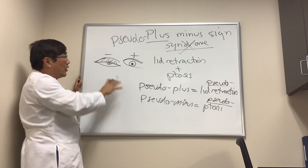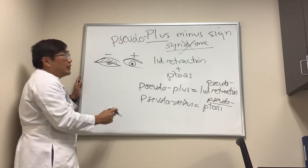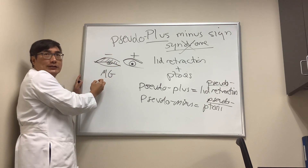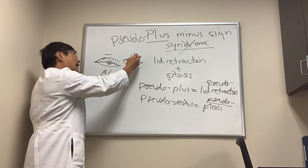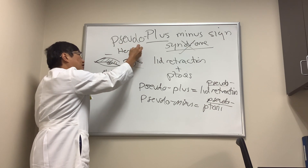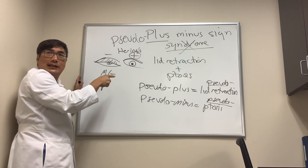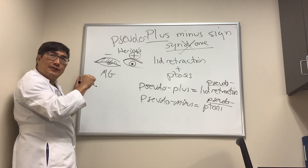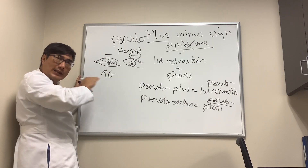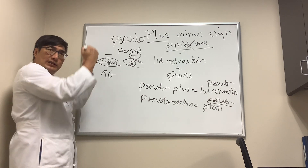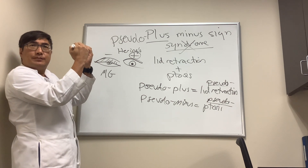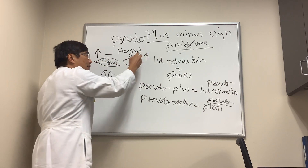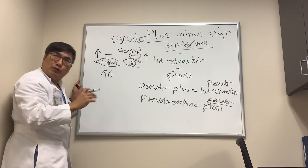If you have a ptosis from myasthenia gravis, for example, on this side, by Hering's law there's going to be equal innervation to the contralateral lid. Because the single central caudal nucleus of the third nerve is supplying both lids, both lids will receive the same amount of innervational effort.